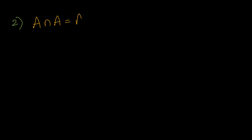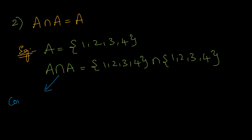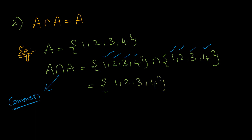Now let us see how to prove the second: A intersection A must be equals to A. Let us consider set A equals to {1, 2, 3, 4}. We need to find the left hand side, which is A intersection A — that is {1, 2, 3, 4} intersection {1, 2, 3, 4}. Intersection means I need to take the common elements in both the sets. One is common, two is common, three and four — each and every element is common. So A intersection A equals {1, 2, 3, 4}, which is nothing but our original set A. So A intersection A must be equals to A.